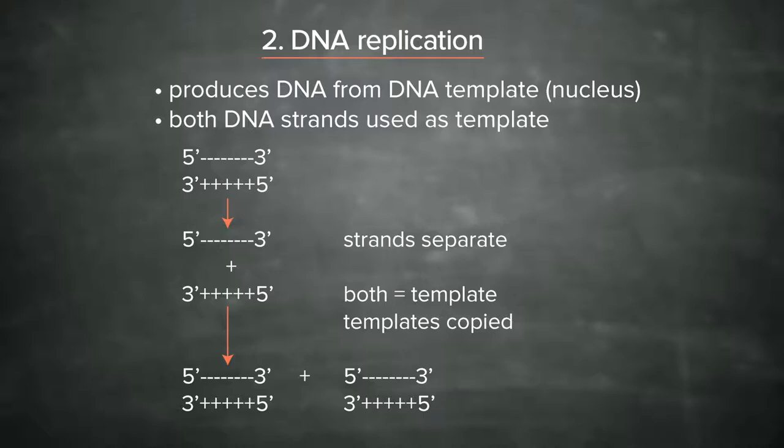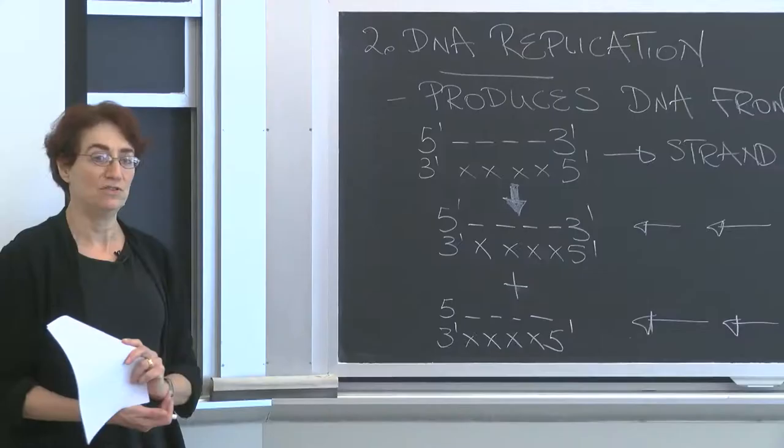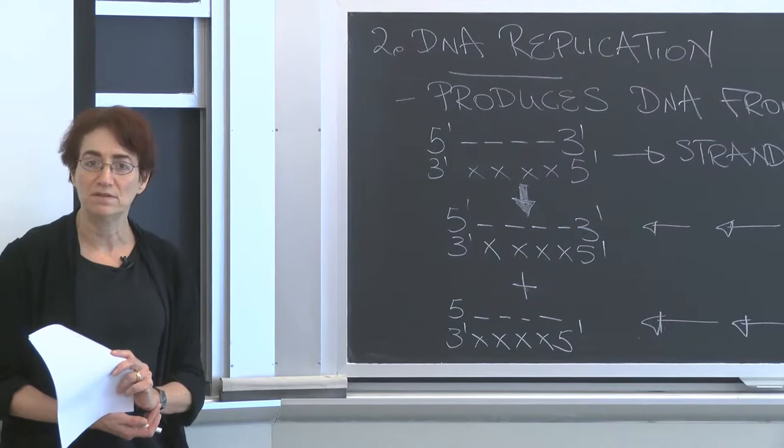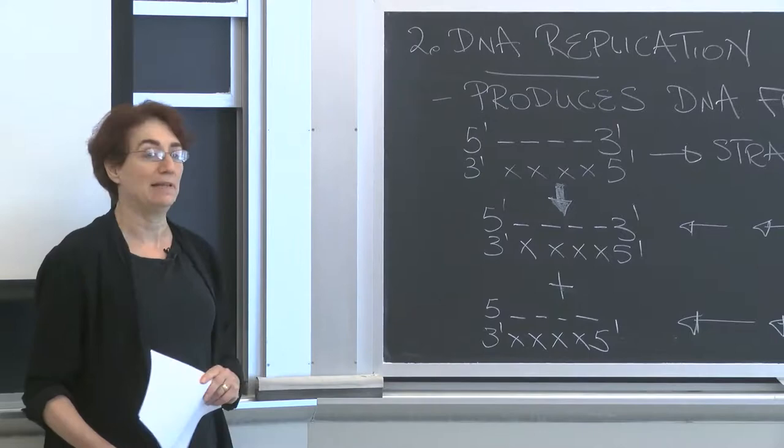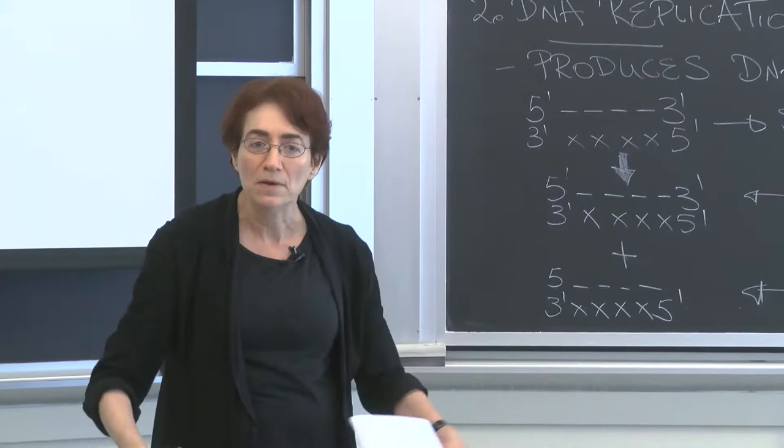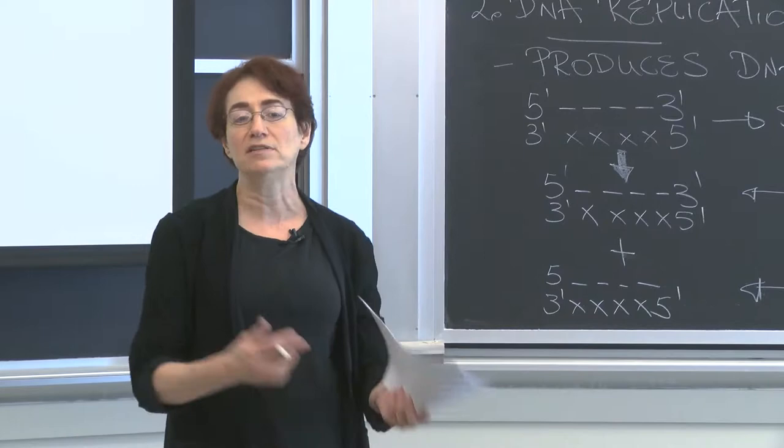So out of this one double-stranded piece of DNA, there are two single-stranded templates that then lead to two new DNA molecules that are identical to the one that you started with. So you've doubled the amount of DNA and made identical new molecules starting with this parental DNA template. This is DNA replication. It is how your genes are replicated from cell division to cell division, from parent to offspring.